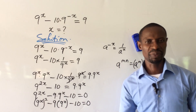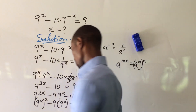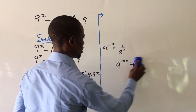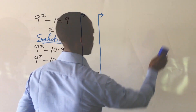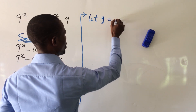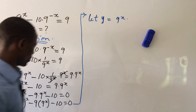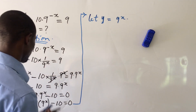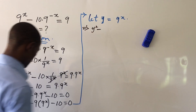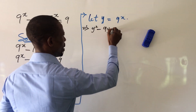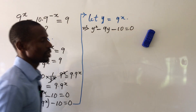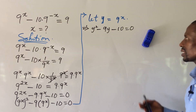We are seeing 9 to the power of x repeating, so we introduce a substitution: let y equal 9 to the power of x. Wherever we see 9^x we replace it with y. Our expression now becomes y squared minus 9y minus 10 equals zero. This is a quadratic equation.